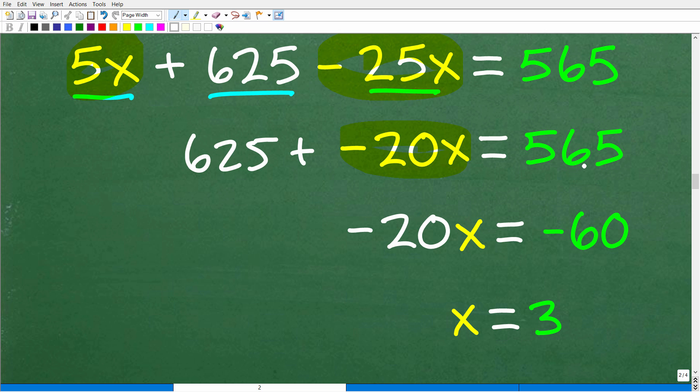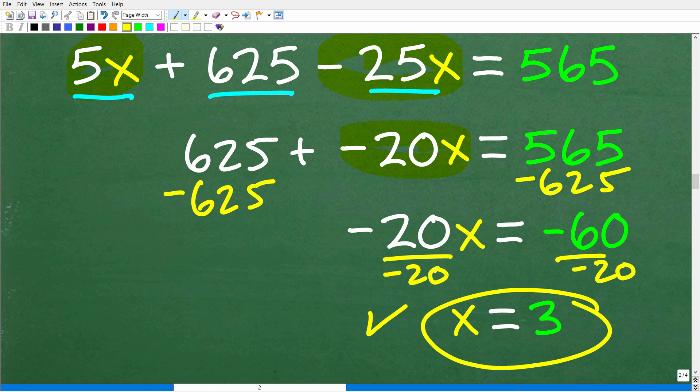So now I need to do what? I need to subtract this 625 from both sides of the equation. And when I do that, I have 565 minus 625. That gives me negative 60. All right. So now I have this equation: negative 20x is equal to negative 60. And of course, to solve for x, all I have to do is divide both sides of the equation by negative 20. So negative 60 divided by negative 20 is a positive 3. So x is equal to 3.